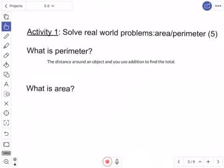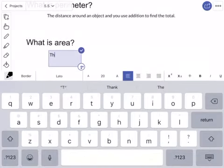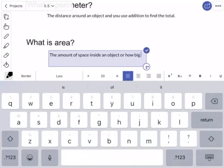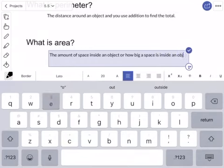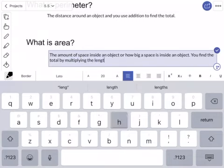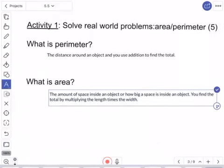For area, I would say the amount of space inside an object, or how big a space is inside an object. You find the total by multiplying the length times the width. So you can pause that, just kind of look at those two definitions, check them against yours.